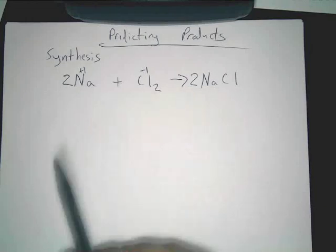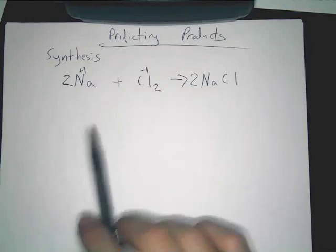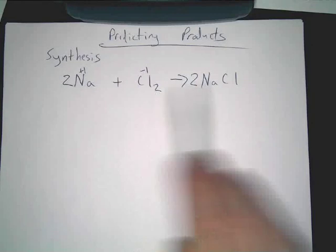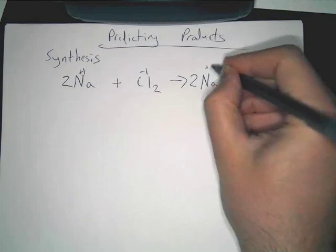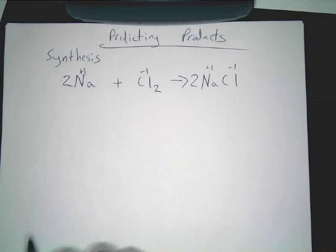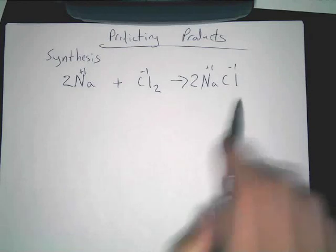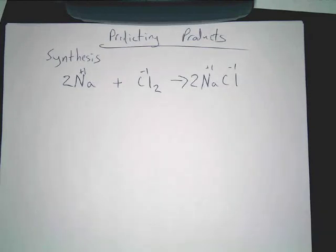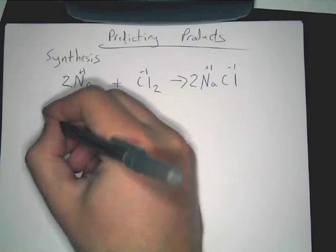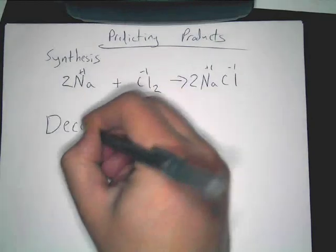So that we could balance the equation. We put the twos there because we needed to balance the equation out. You don't carry this two over here because it's plus one and negative one. You have to then go back and reconcile it and balance it out. Now, the next type is decomposition. We're going to keep it very simple.